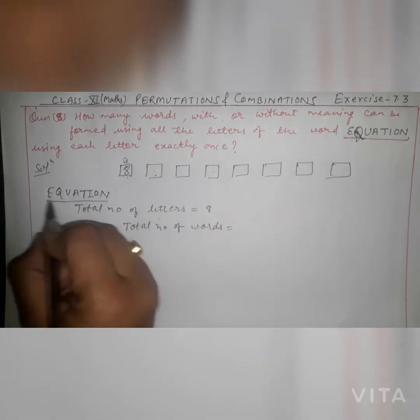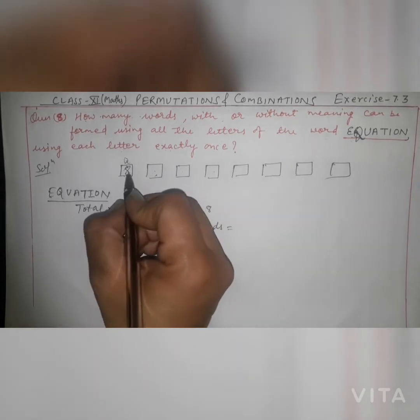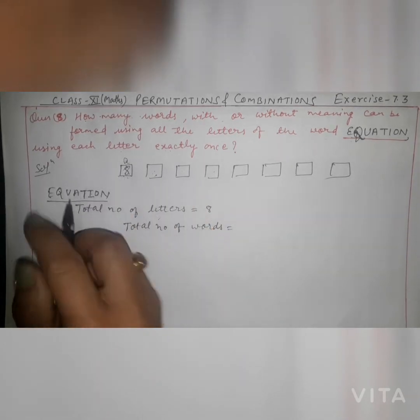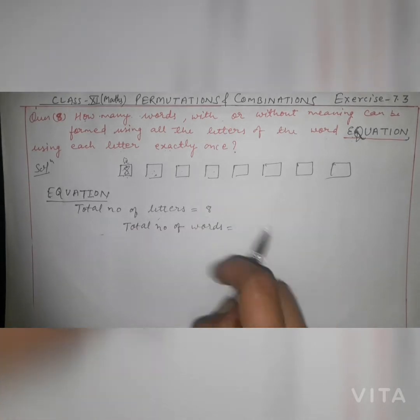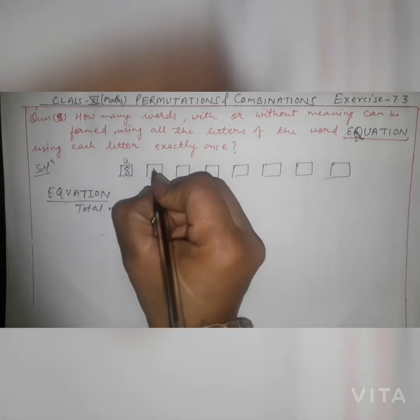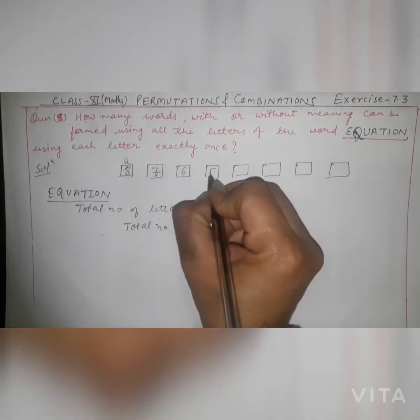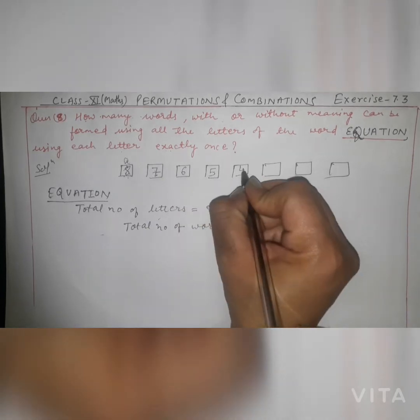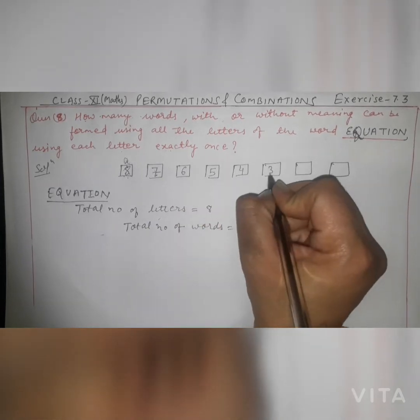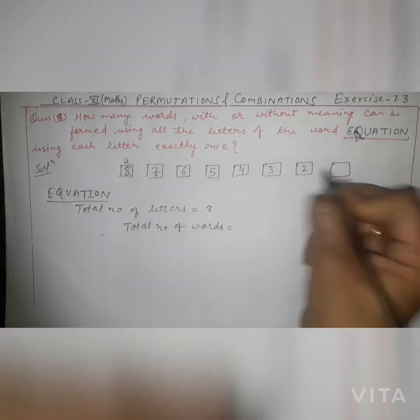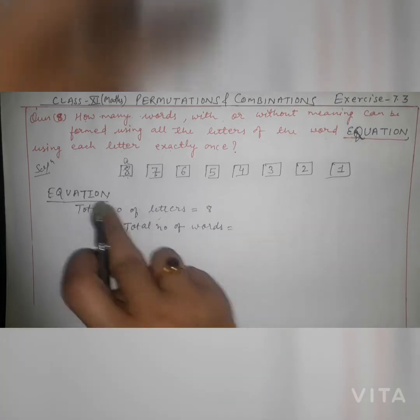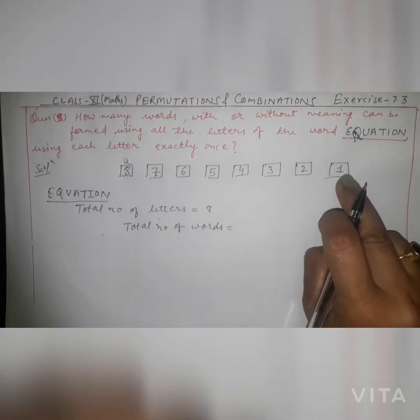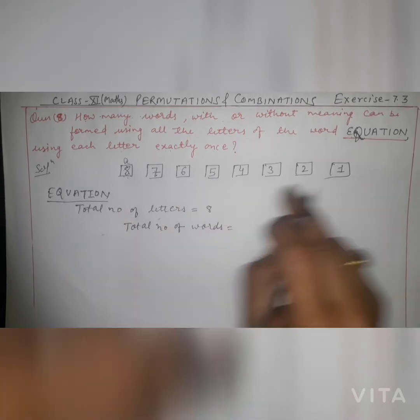Similarly, when one letter has already been placed in the first box, the second box has 7 choices. Then the third box has 6, then 5, then 4, then 3, then 2. In the last box, only one letter remains, so it can be filled in 1 way.